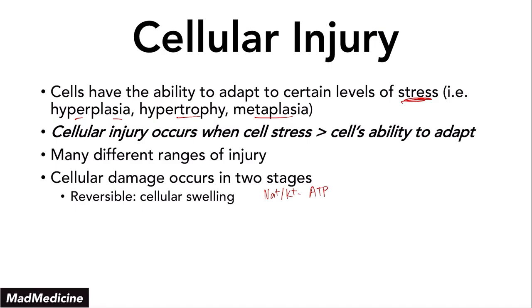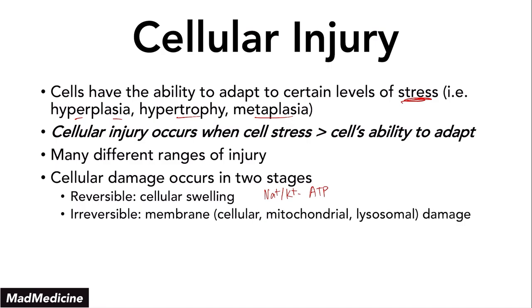The second stage is going to be the irreversible stage, where you have membrane damage — not just of the cell itself, but also of mitochondria. When you damage the mitochondria, you are going to release cytochrome C, which is going to induce apoptosis. And when you damage a lysosome, you are going to release enzymes which are going to damage the cell overall. That irreversible stage is going to lead to cell death.